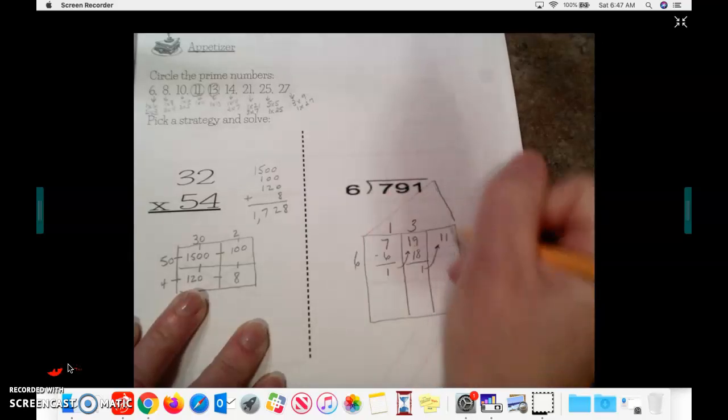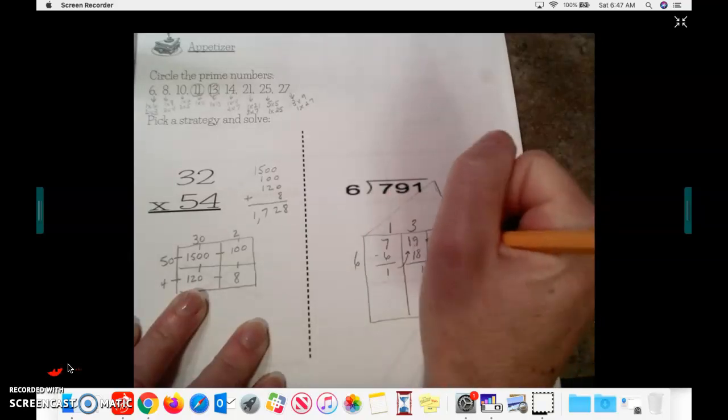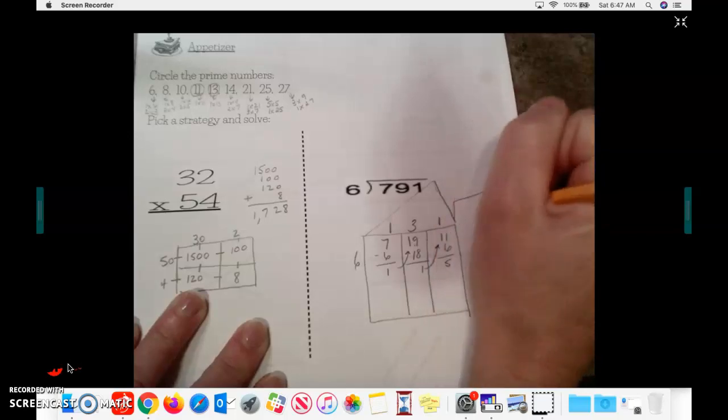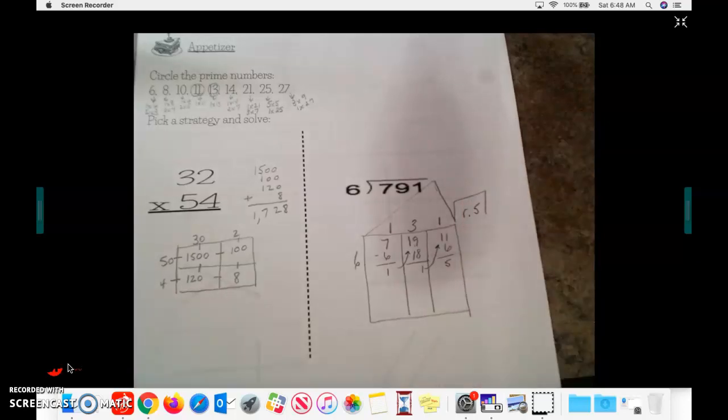6 goes into 11. One time. 6 times 1 is 6. When I subtract, I get 5. So 131, remainder 5.